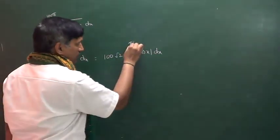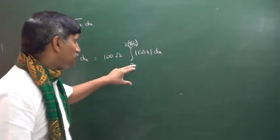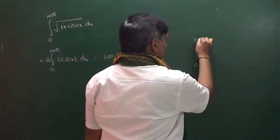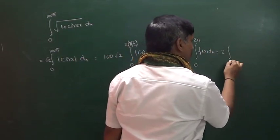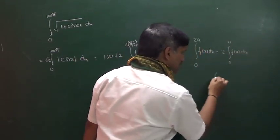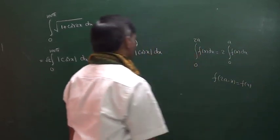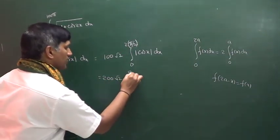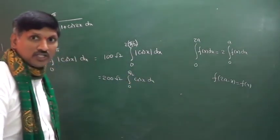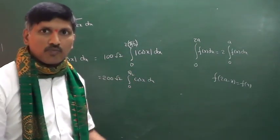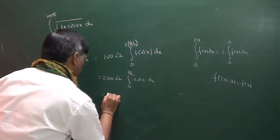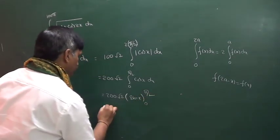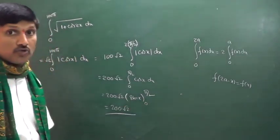Between 0 and π/2, cos x is positive, so |cos x| = cos x. The integral of cos x is sin x, evaluated from 0 to π/2 gives 1. Therefore the answer is 200√2.